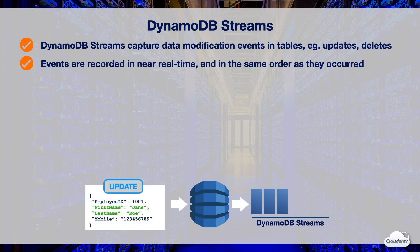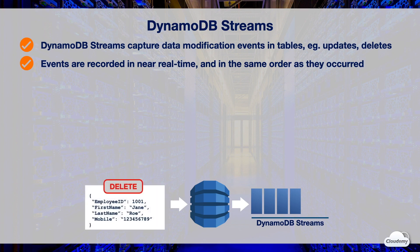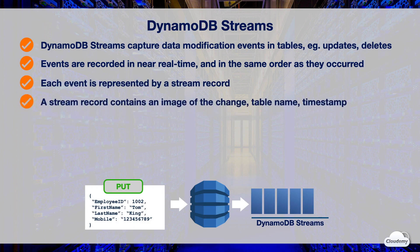When you update an item, the stream captures an old image and a new image of the item before and after the modification. When you delete an item, the stream also captures the deleted item so you can run some post-deletion process. Each event captured in the stream is represented by a stream record, which contains an image of the change, table name, event timestamp, and other metadata.